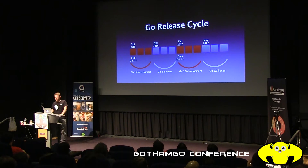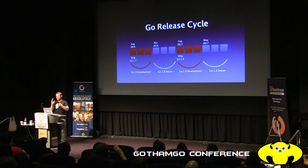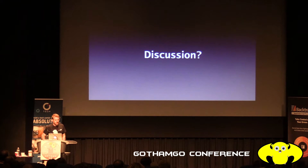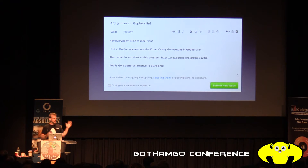The last half of the cycle — which we're in now for Go 1.8 — is the freeze, and then we release and repeat. As far as how the Go community talks amongst ourselves, it seems nowadays on GitHub that the issue tracker has become the community forum. We were totally shocked when we switched to GitHub that people started filing bugs like 'hey everyone, nice to meet you, I live in Gopherville, I wonder if anyone has Go meetups here.'